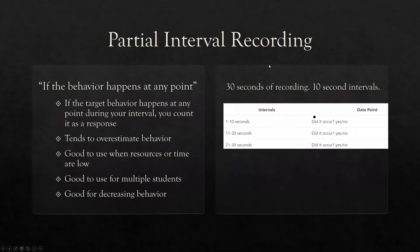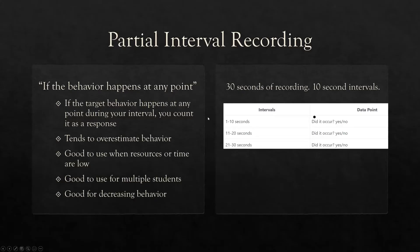Partial interval recording: if the behavior happens at any point during an interval, it counts as a response, no matter how long or how short. Partial interval recording tends to overestimate behavior, because if that behavior occurs for even a second during a 10 or 20 second interval, the data indicates that behavior occurred for the full time. It's good to use when resources or time are low, when you have multiple students, and for decreasing behavior.